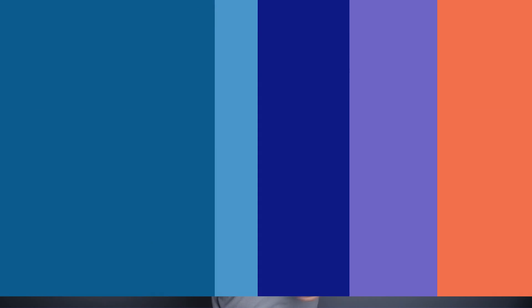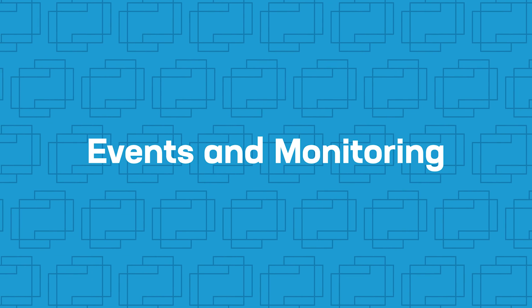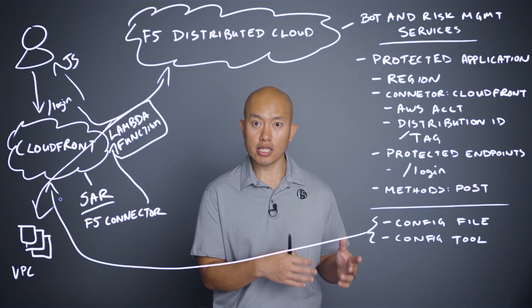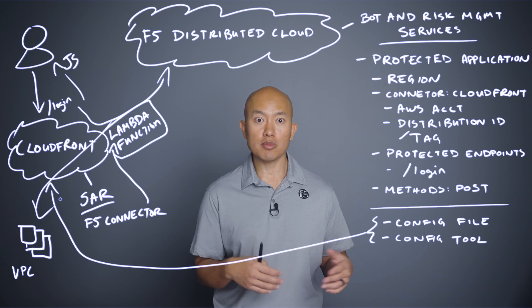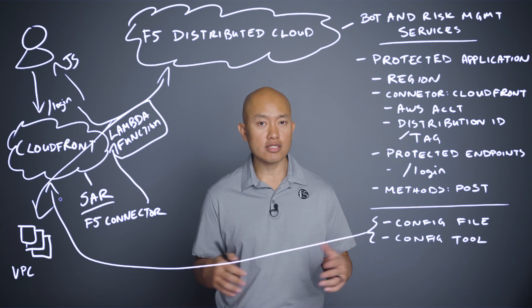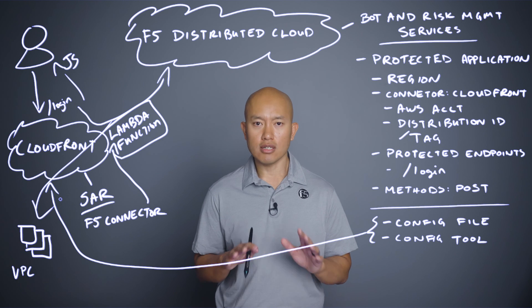Easy as that. From there, all the monitoring and events will be found in the F5 Distributed Cloud console. You'll see maps and attack sources, types of bots, the top endpoints being attacked, and all sorts of information in there.